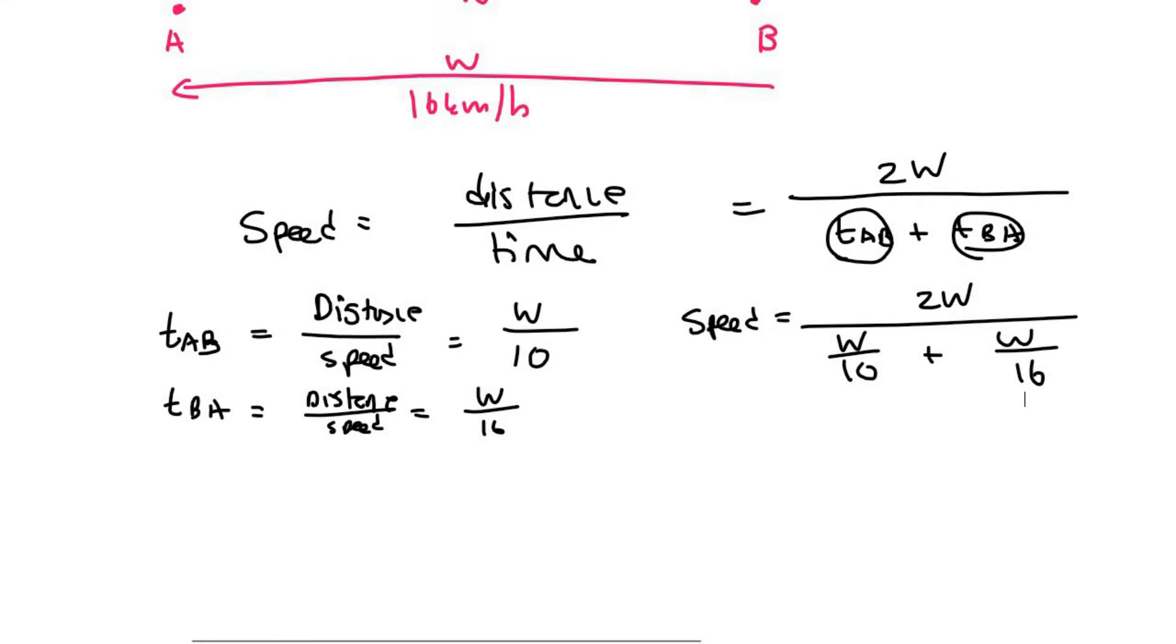Now, what happens is the following. At the bottom, you should put those two together. So you could almost think of it like this. Speed is equal to 2W over, now this is 1 over 10 W plus 1 over 16 W. You can think of it like that if you want. And so you're just adding the bottom together. It's 1 over 10 plus 1 over 16.